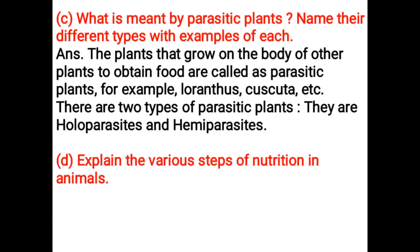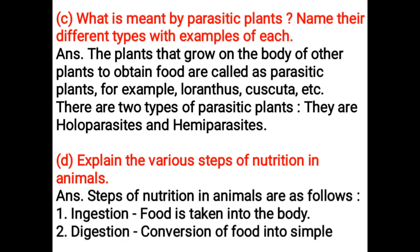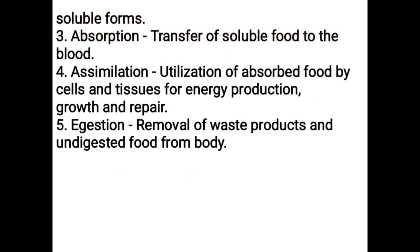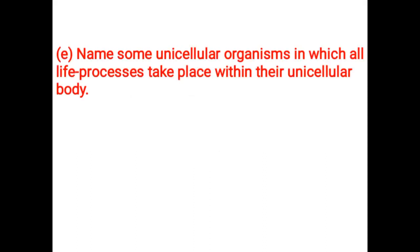Explain the various steps of nutrition in animals. Steps of nutrition in animals are as follows: Ingestion – food is taken into the body. Digestion – conversion of food into simple soluble forms. Absorption – transfer of soluble food to the blood. Assimilation – utilization of absorbed food by cells and tissues for energy production, growth and repair. Egestion – removal of waste products and undigested food from the body.